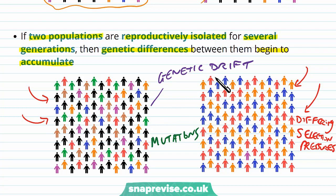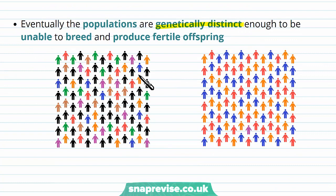They'll be genetically distinct enough that they cannot breed together and produce fertile offspring. So it's kind of a gradual process — some will have differences and become reproductively isolated due to all of those changes to their DNA, and then they'll be classed as two different species.